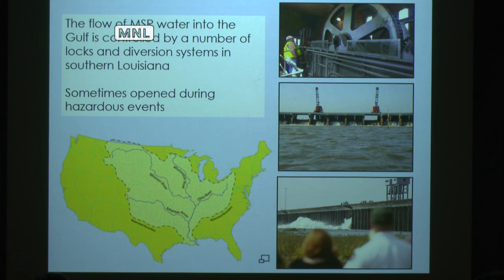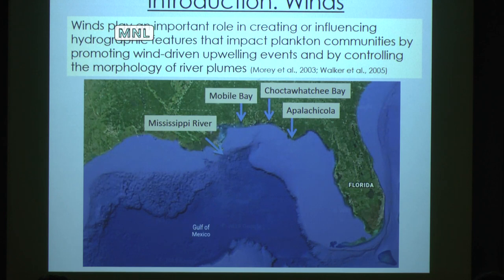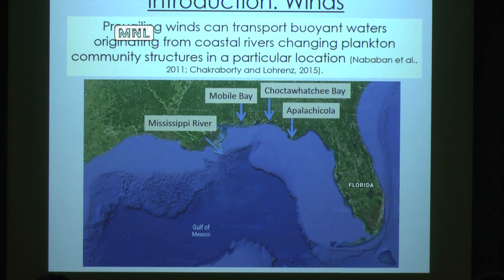The flow of Mississippi water into the Gulf is controlled by a number of locks and diversion systems. Sometimes they're opened to aid mitigation in the face of a hazardous event, such as in 2010 to help mitigate the Deepwater Horizon oil spill, and again the following year in 2011 during the historic Mississippi River flood. Once that water enters the Gulf, it's subjected to prevailing winds, which play a really important role in influencing zooplankton and plankton communities by promoting upwelling and controlling the morphology of the river plume. It can bring water to areas that had fewer nutrients, thereby changing the plankton community structure in that region.